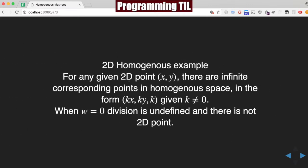So moving on with this example, if we have a given 2D point XY, there are infinite points in the homogeneous space in the form of KX, KY, K, given K is not equal to 0, because we cannot divide by 0.